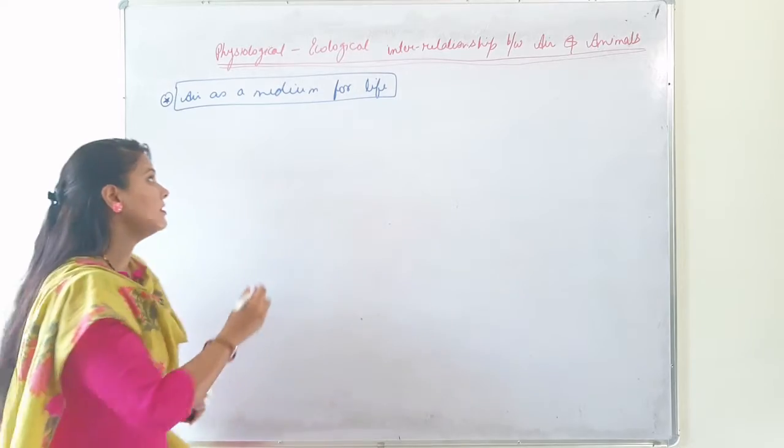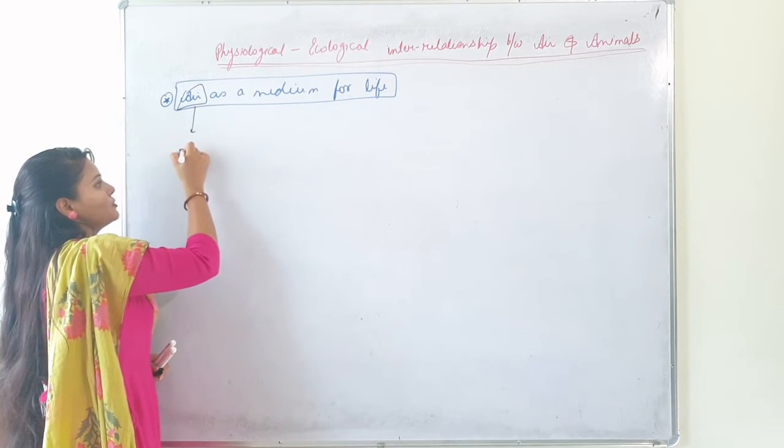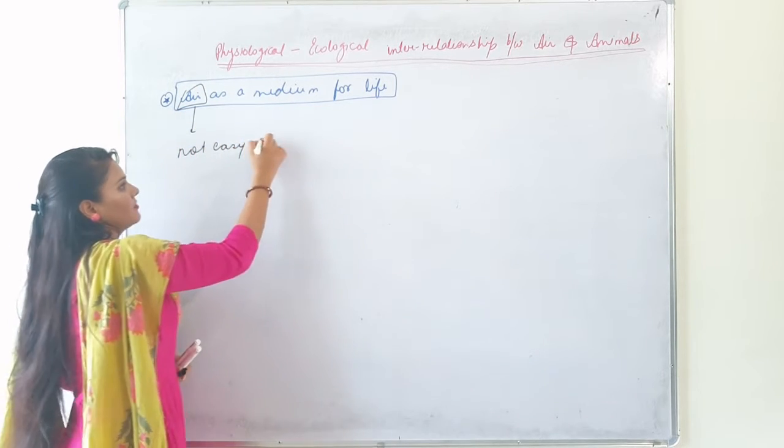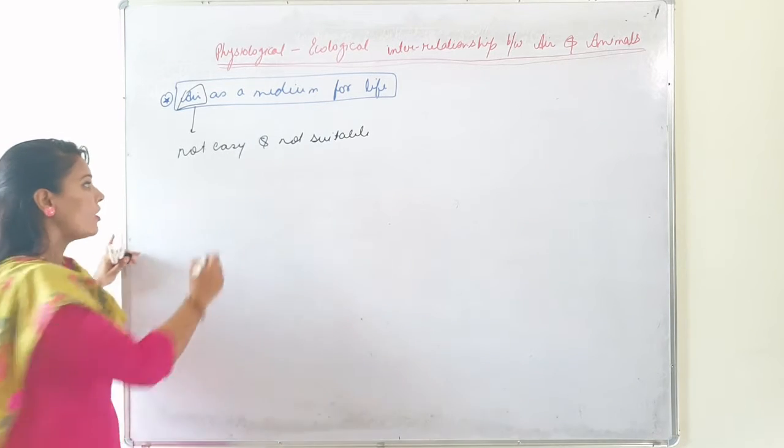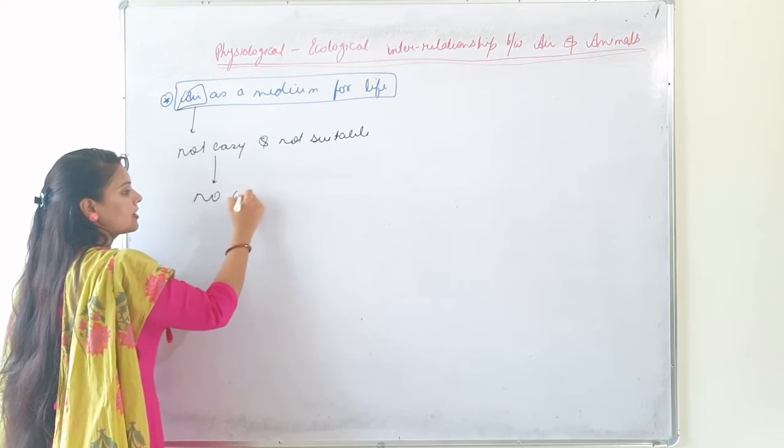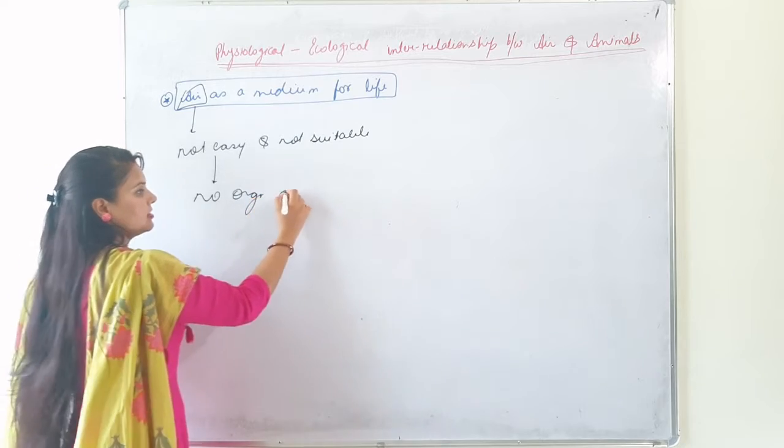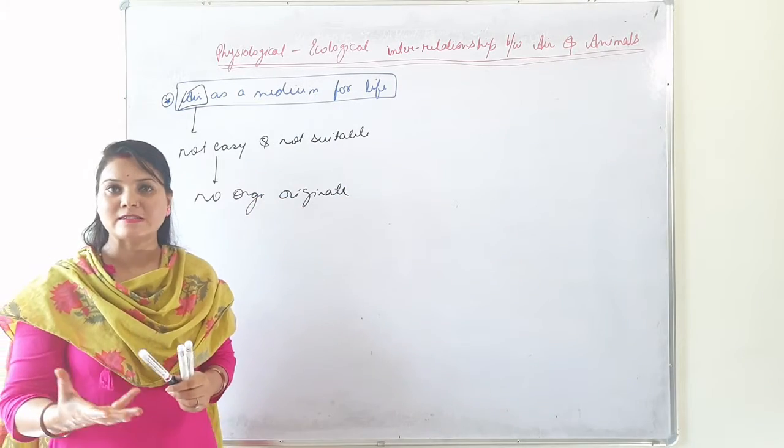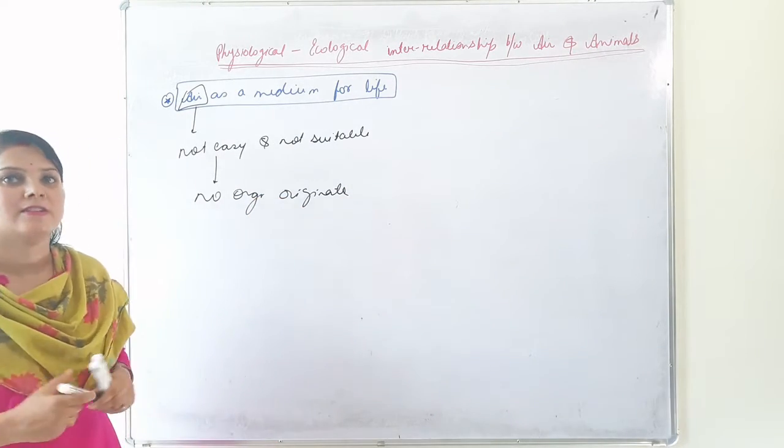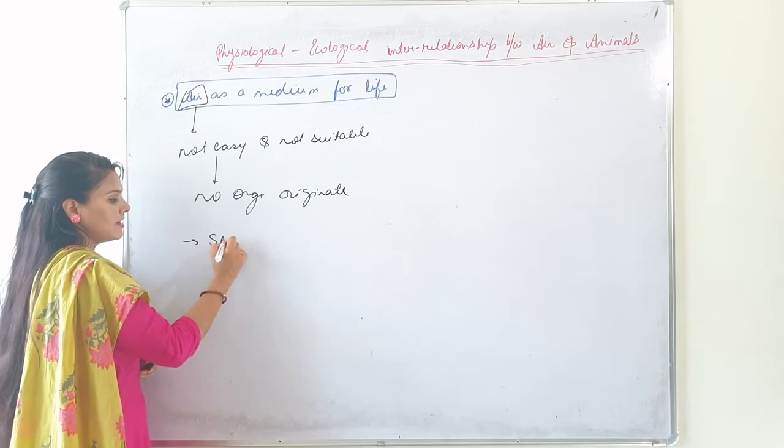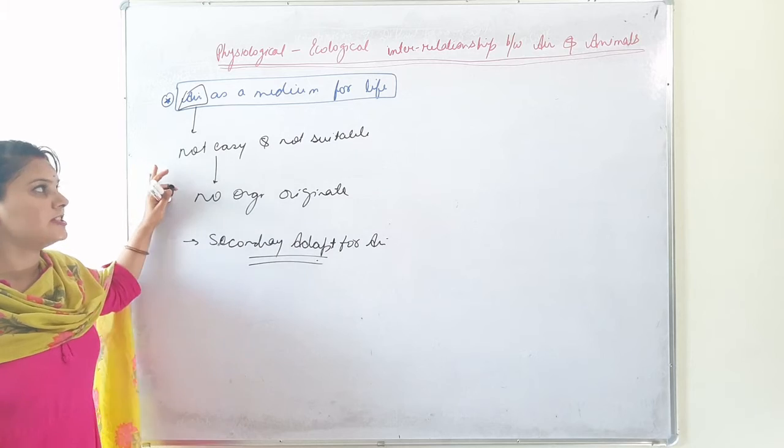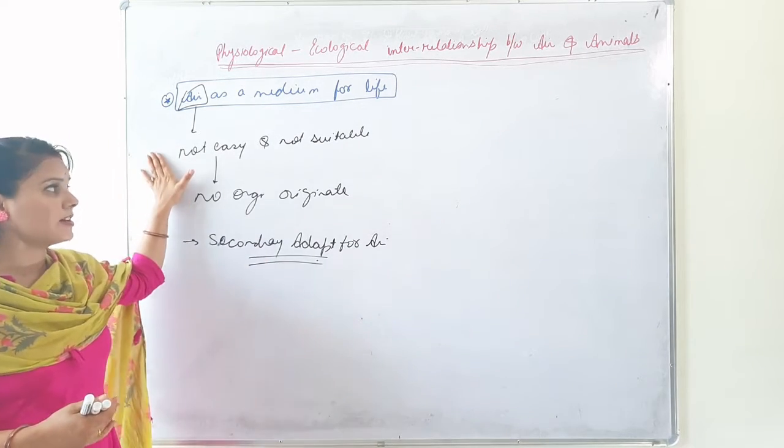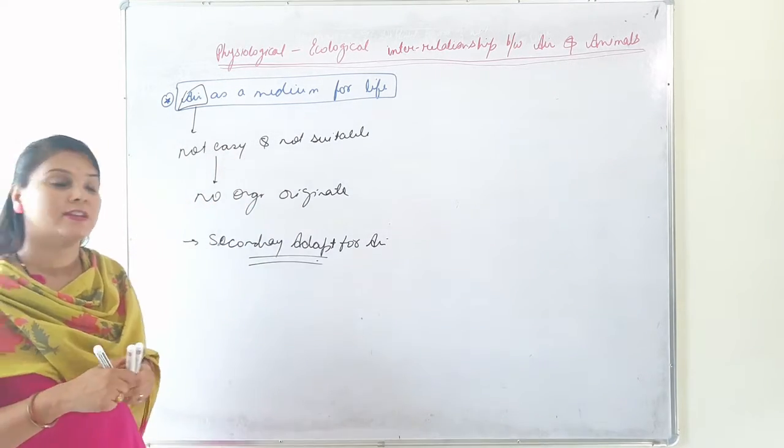Now let's see how air influences the existence of life. Basically, air is not easy and suitable medium for life. No organism originates in air. Some aquatic and terrestrial animals get secondarily adapted for air, but no animal originates in air.